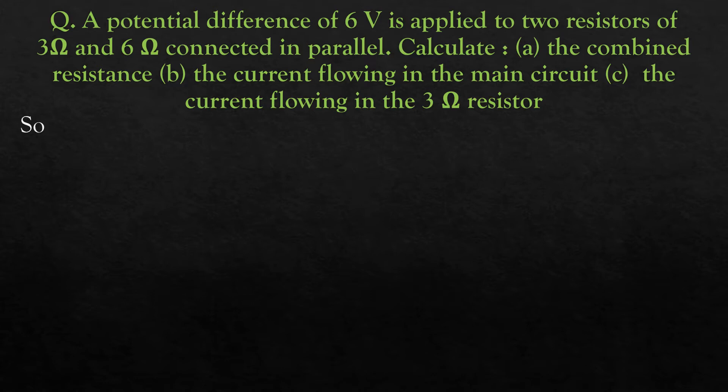Given in our question: the potential difference is 6 volts, and they have 2 resistors used which are 3 ohm and 6 ohm. So let's write: R1 = 3 ohm and R2 = 6 ohm. Now we are talking about combined resistance in parallel combination.